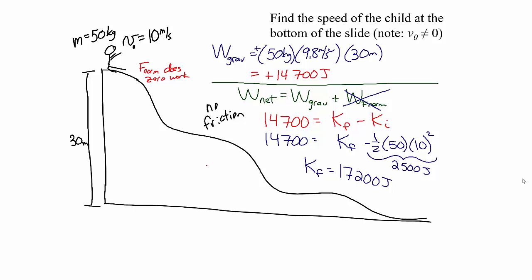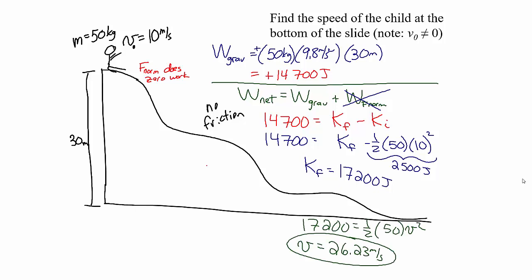Since we want the speed, we relate this kinetic energy to the speed. Kinetic energy is one half mv squared, so 17,200 joules equals one half times 50 kilograms times v squared. The speed at the bottom of the slide is 26.23 meters per second. Note that because this child did not start from rest, we had to make sure we included that initial kinetic energy.